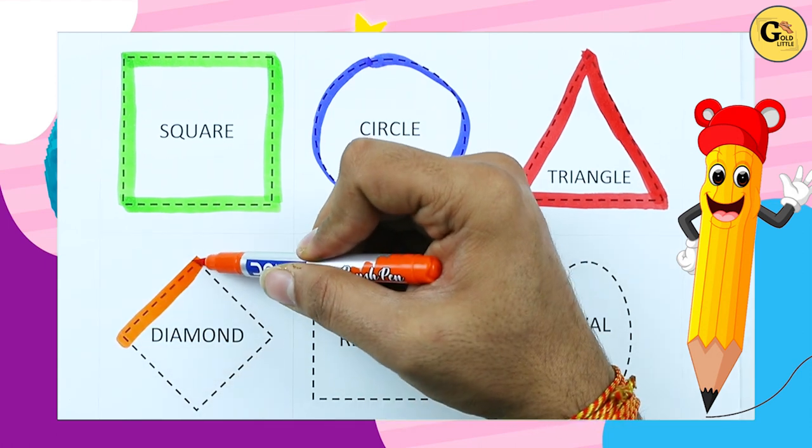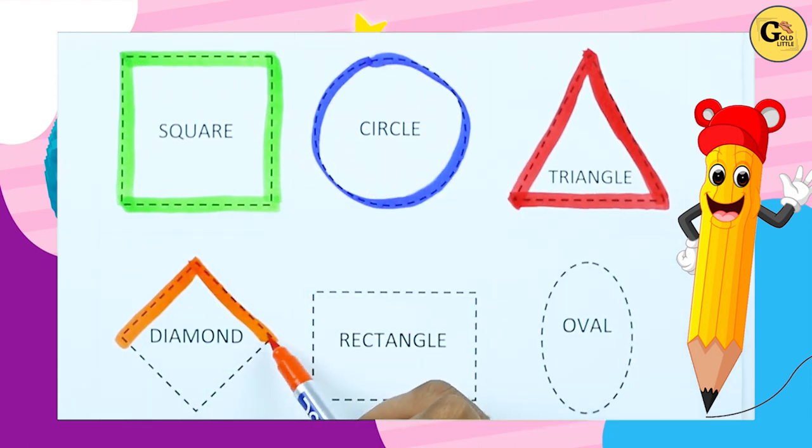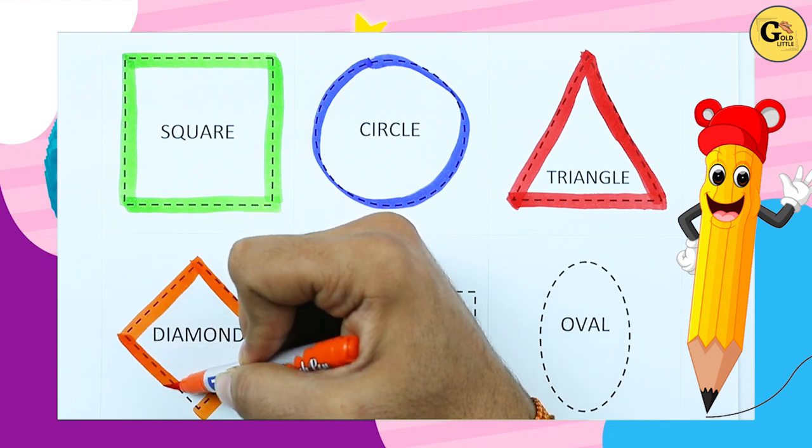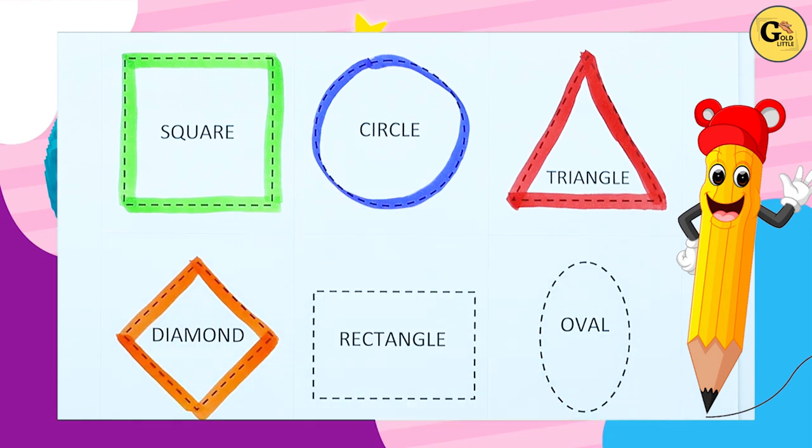One sliding line, two sliding line, three sliding line, four sliding line. It's a diamond, orange color diamond.